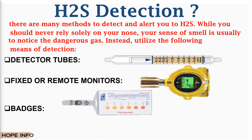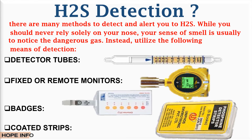Detection method number three is badges resembling credit cards — these portable monitors can be carried and change color depending on gas level; some can also set off an alarm if exposure exceeds a set level. Detection method number four is colorimetric strips: lead acetate strips that usually turn brown or black due to H2S, with the degree of color indicating the gas concentration. While helpful for determining if H2S is present, colorimetric strips should not be the only tool used, as they are not fully accurate. Work sites should utilize various tools together to detect H2S.